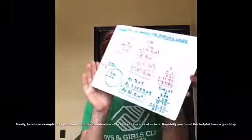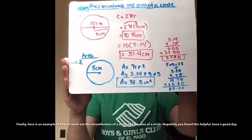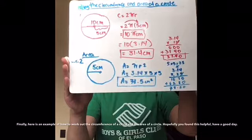Finally, here is an example of how to work out the circumference of a circle and the area of a circle. Hopefully, you found this helpful. Have a good day. Thanks, guys.